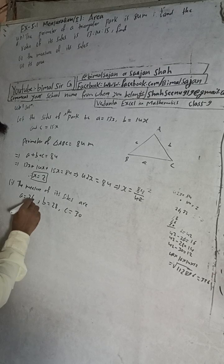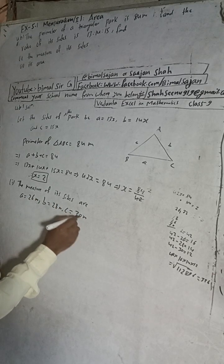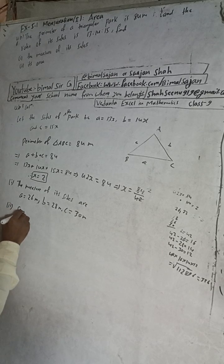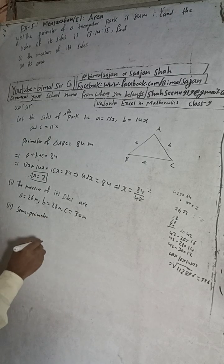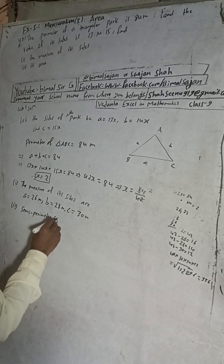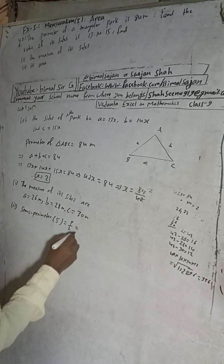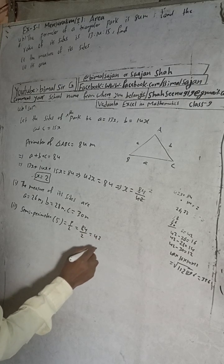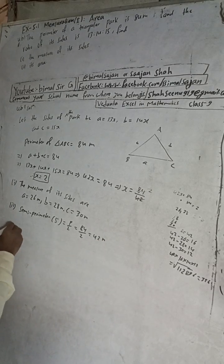Now number one is finished. To find the area, first we have to find the semi-perimeter. Semi-perimeter s = perimeter ÷ 2 = 84 ÷ 2 = 42 meters.